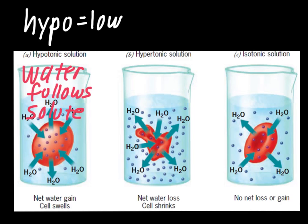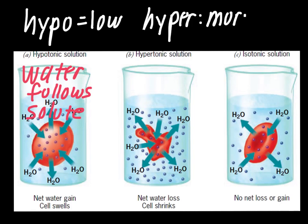Our next example is a hypertonic solution. Hyper tells us there is now more solute outside of the cell than inside — hyper means more or high. Looking at the picture, you can see lots of the dark blue or purple dots representing solute on the outside, and only about five of them inside the cell. Remember, water follows the solute. So if there's more solute outside the cell, a lot of the water is leaving — the cell shrivels up and gets very tiny. We have a net water loss, and the cell is shrinking.